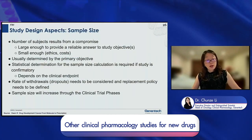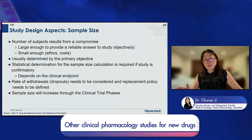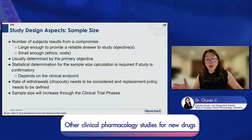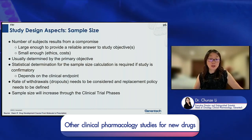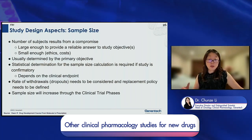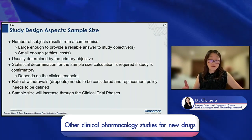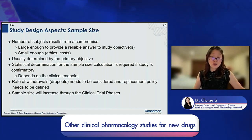Regarding sample size considerations, for first-in-human studies the sample size is really small — around six to eight, or even three to six per dose level, with or without placebo depending on the indication. For phase two and phase three, sample size depends on your clinical endpoints, and you need statistical determination for the calculation. For confirmatory phase three studies targeting a specific efficacy benefit compared to standard of care, you need to do sophisticated calculations.